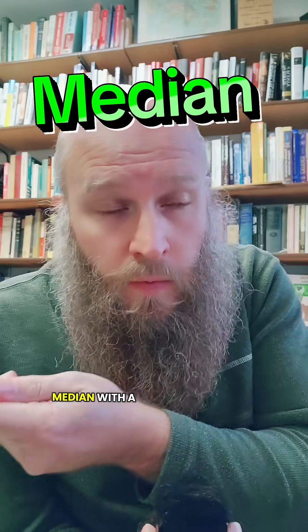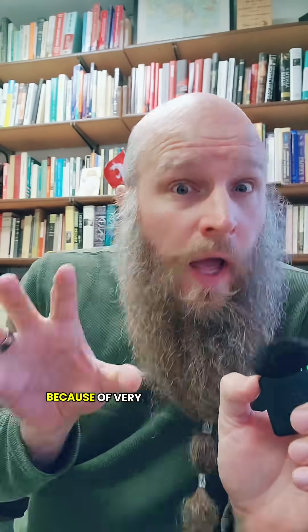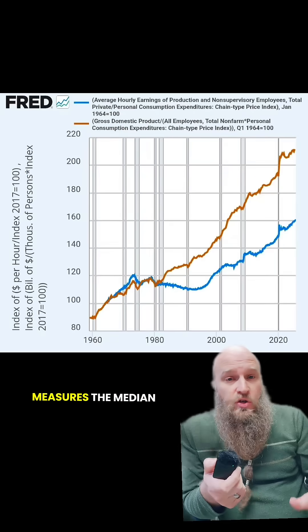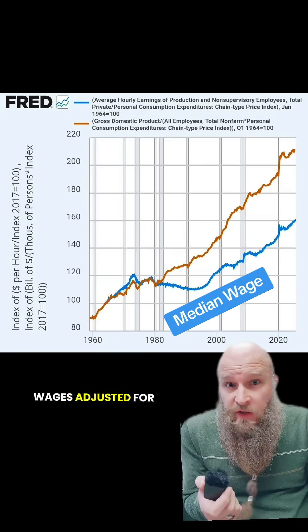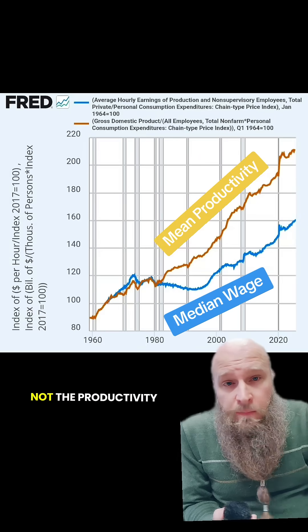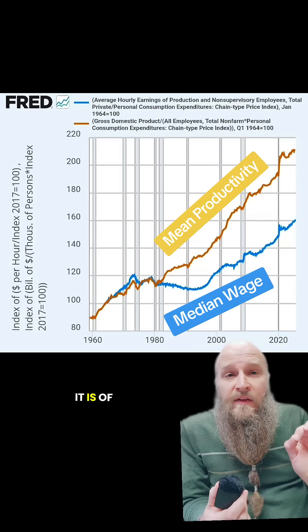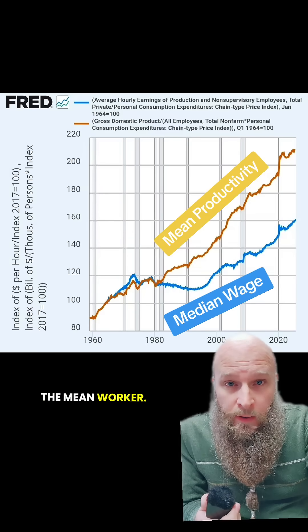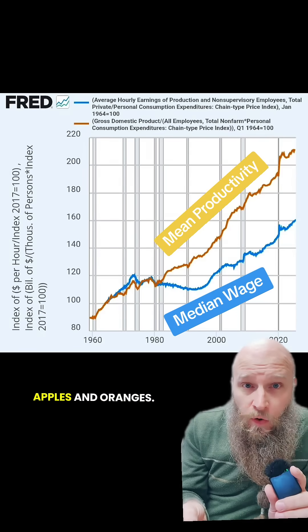It compares a median with a mean. Everybody on the internet understands that because of very large income inequality, the median is the more interesting measure rather than the mean, because the median is not affected by outliers. The blue line measures median wages adjusted for cost of living, but the productivity line in orange is not the productivity of the median worker — it is of the average, or mean, worker. We're literally comparing apples and oranges.